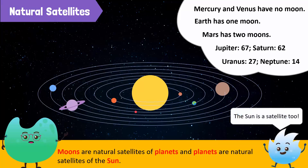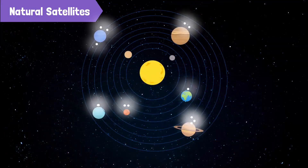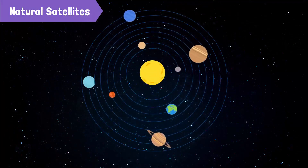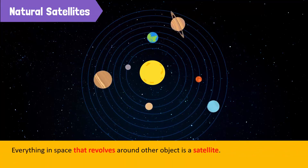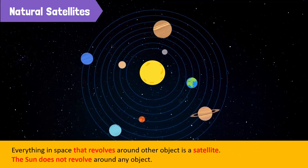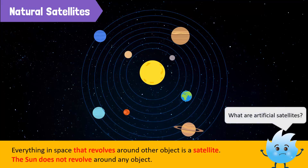Is the sun a satellite too? No, Spiky, the sun is not a satellite. Do you know why? Everything in space that revolves around other larger objects is a satellite. The sun does not revolve around any object, so it is not a satellite. Oh, now I understand. But what are artificial satellites?